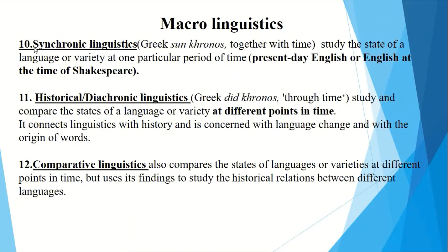At number ten, we have synchronic linguistics, which studies the state of a language or variety at one particular period of time — for example, present-day English or English at the time of Shakespeare. At number eleven, we have historical or diachronic linguistics, which studies and compares the states of a language or variety at different points in time. It connects linguistics with history and is concerned with language change and the origin of words. Finally, at number twelve, we have comparative linguistics, which also compares the state of languages at different points in time but uses its findings to study the historical relations between different languages.